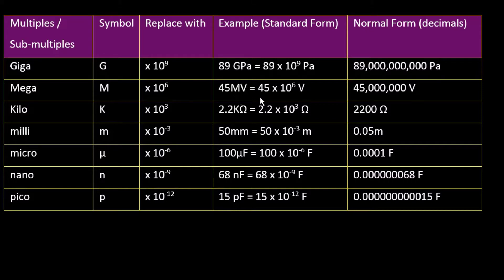45 Mega, 45 times 10 to power 6. So the Mega is 10 to power 6. And that means you add 6 zeros onto it. 2.2 Kilo, 2.2 times 10 to power 3. You add 2 zeros on because of the decimal point. So you just multiply by 1000.